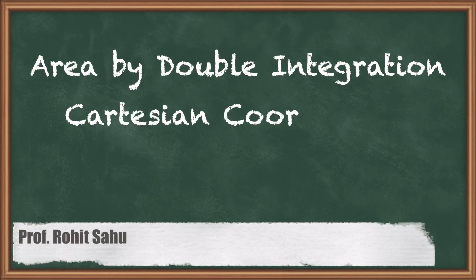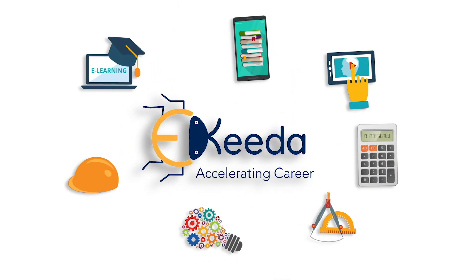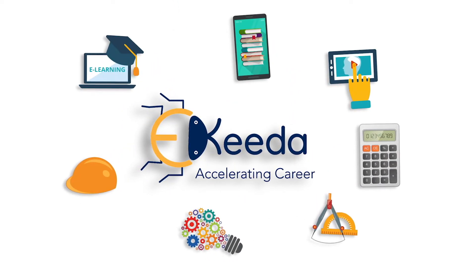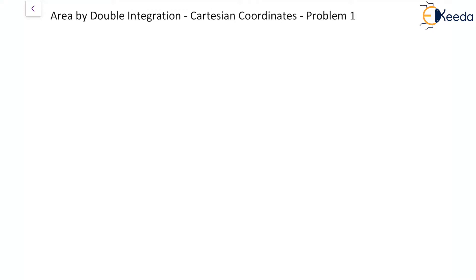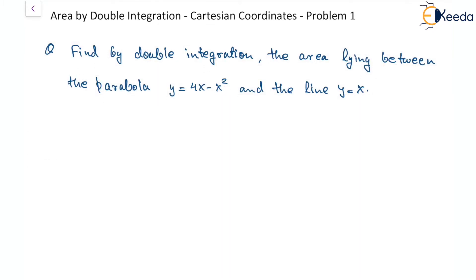Hello friends, in this session we are going to discuss a problem on area by double integration for Cartesian coordinates. So let's say the question is: Find by double integration, the area lying between the parabola y = 4x - x² and the line y = x.